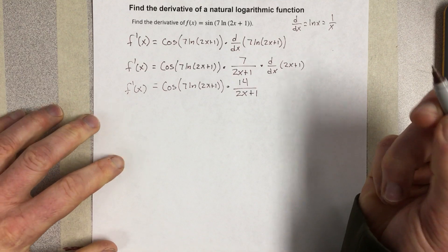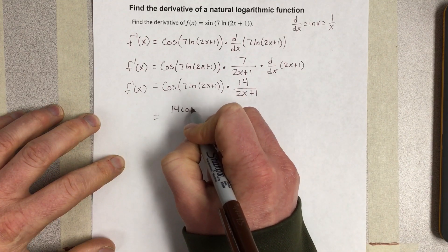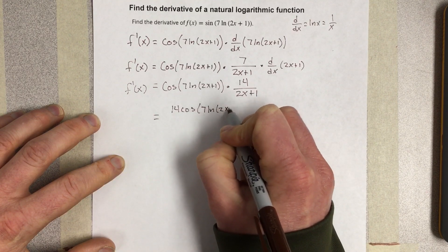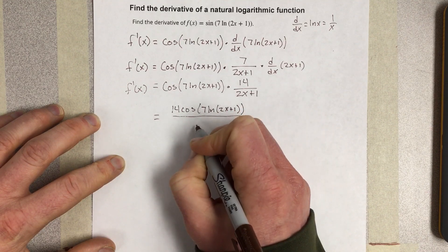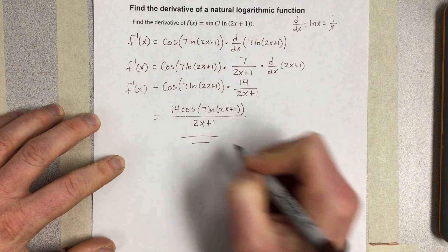So if you wanted to combine those together, you could write that as 14*cos(7*ln(2x+1))/(2x+1). And that would be the derivative.